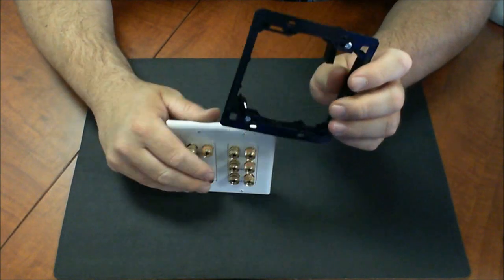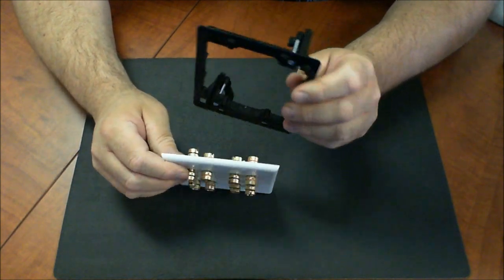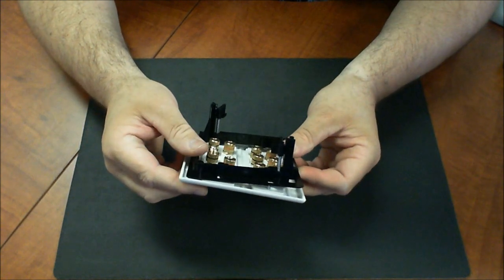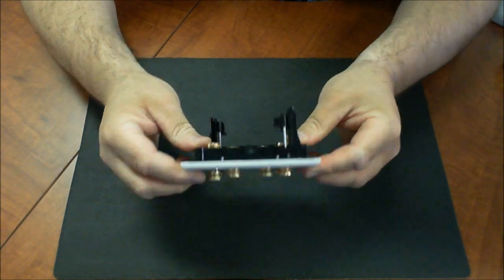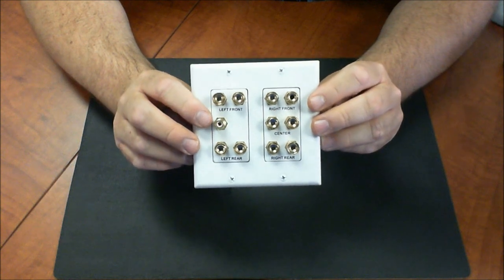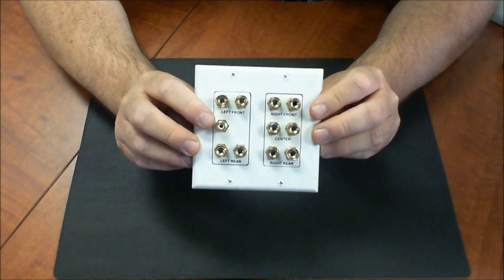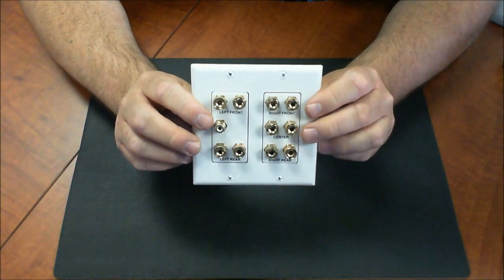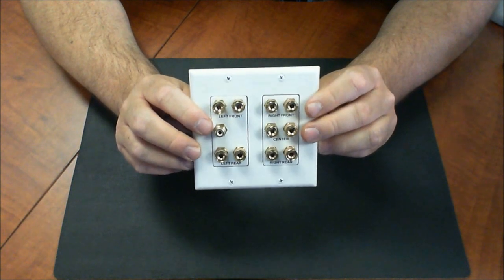But this is a double gang existing construction wall plate and I'm just going to go ahead and put that right on top of that. That's what it's going to install. So now you have a nice durable surface to mount this while you're managing all your speaker connections. Just another nice way to manage all your cables for your surround sound system.